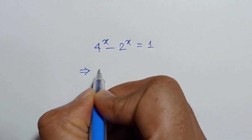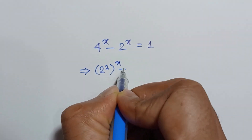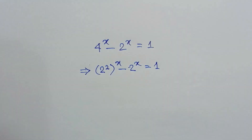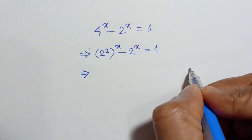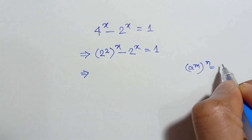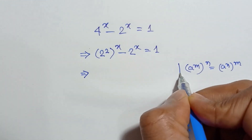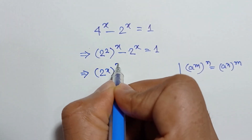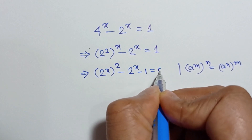4 can be written as 2 squared, whole to the power x, minus 2 to the power x is equal to 1. Applying the formula (a^m)^n = a^(mn), we get 2 to the power 2x minus 2 to the power x minus 1 is equal to 0.